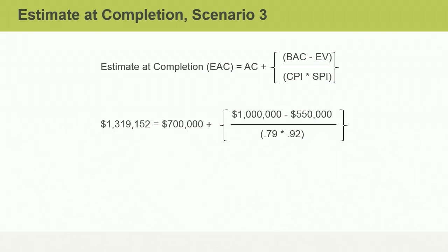Don't forget to add the actual cost of $700,000. That gives us a new EAC of $1,319,152. Don't worry too much about rounding and whether to round to two decimal places or more — that will not significantly impact your answer.